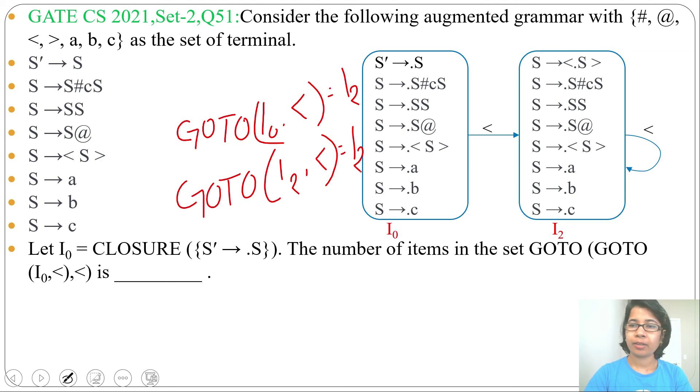So just count the number of items: it will be 1, 2, 3, 4, 5, 6, 7, 8. So there are 8 LR0 items. The answer will be 8.